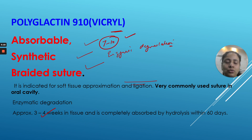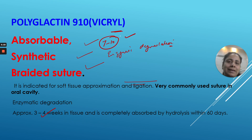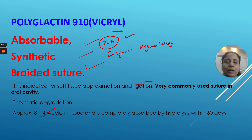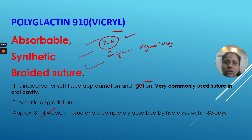Sutures in the oral cavity are supposed to be removed within 7 to 10 days, meaning they are not yet resorbed at that point. When using Vicryl, you must inform your patients that it will not dissolve within 7 to 10 days — it loosens within 3 to 4 weeks and fully resolves within 60 days. I usually recall my patients after 10 to 12 days and remove the Vicryl sutures myself.